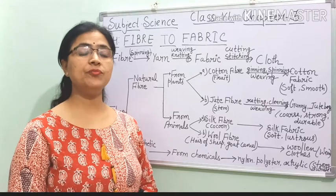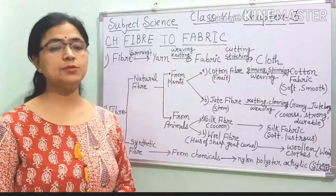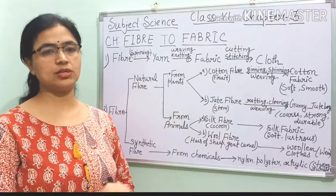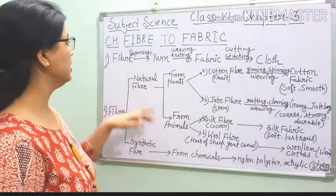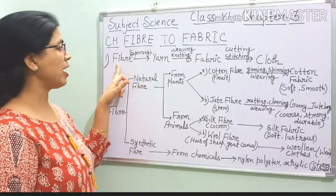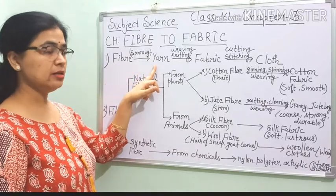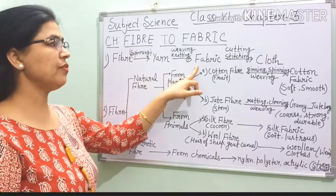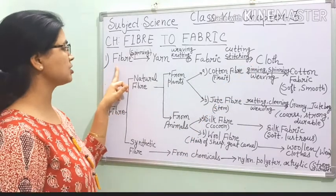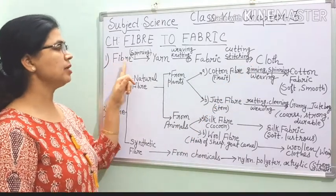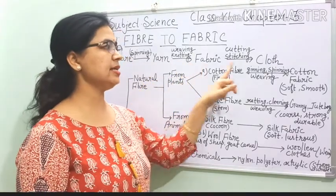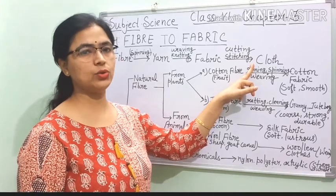Every fabric is made up of very little, very thin thread-like structures. Scientifically, fibre is a very thin structure. Fibre makes yarn, yarn makes fabric, and fabric makes cloth. Fibre is converted into yarn, yarn is converted into fabric, and after that we can see the clothes at home.